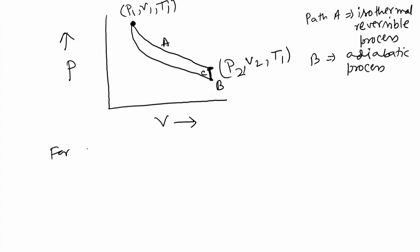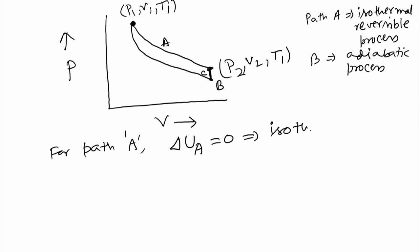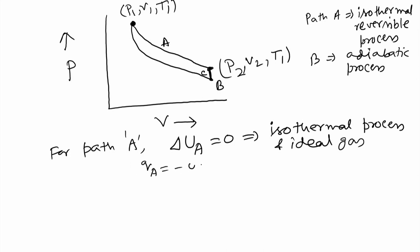For path A (isothermal reversible): internal energy change ΔU_A = 0, because for an ideal gas internal energy is a function of temperature only, and temperature is constant. Therefore Q_A = −W_A.